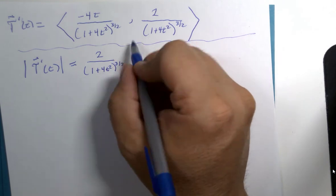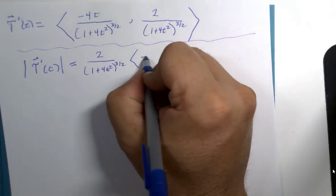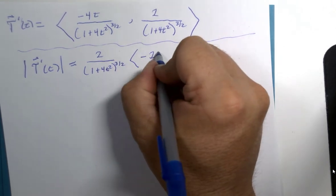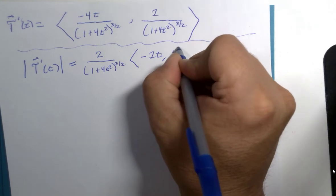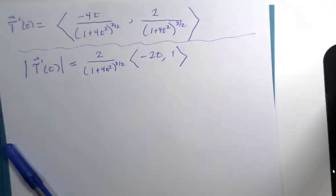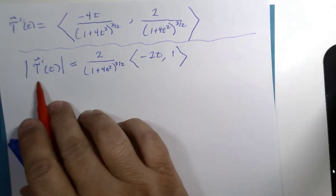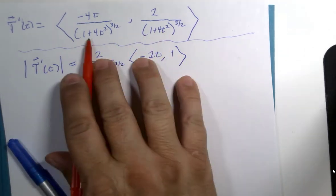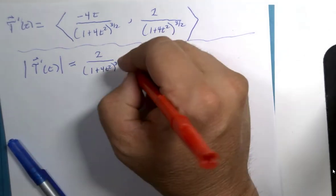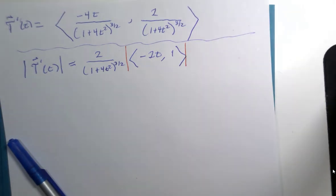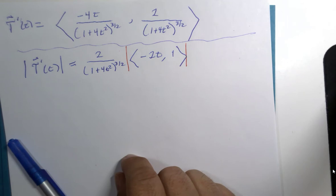And what I would be left with is negative 2t comma 1. Now I've got a notation problem here. So to find the magnitude of this, I've pulled out the scalar, and I'll just find the magnitude of what's left. I didn't have to do it that way, but I'm again trying to show a variety of pieces and skills.